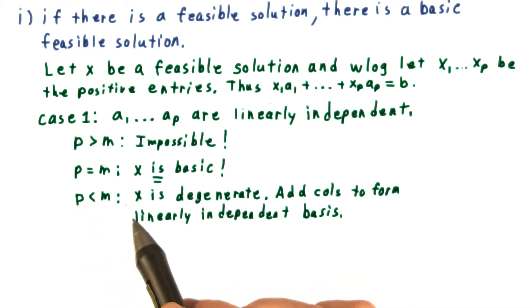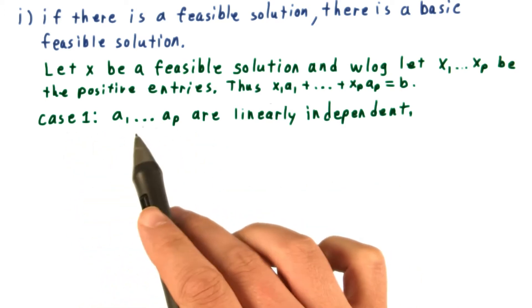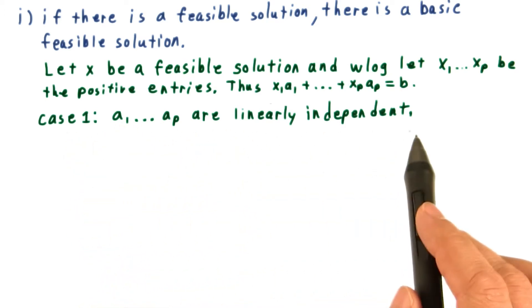P could be less than m, that would mean that x is degenerate. But then we can just add columns to form a linearly independent basis, and we would be all right. So that then covers the case where these columns are linearly independent.